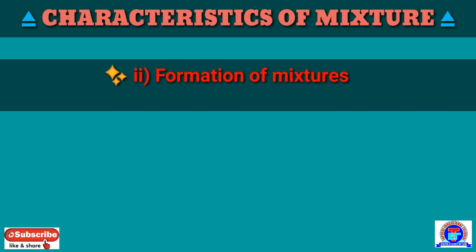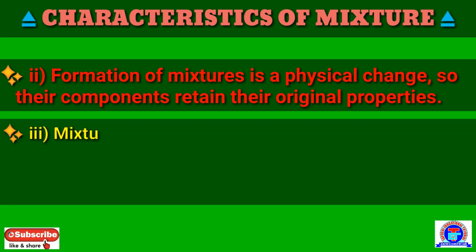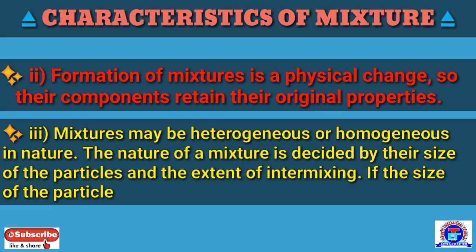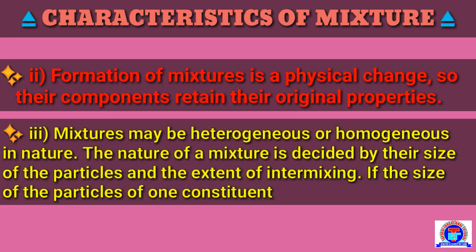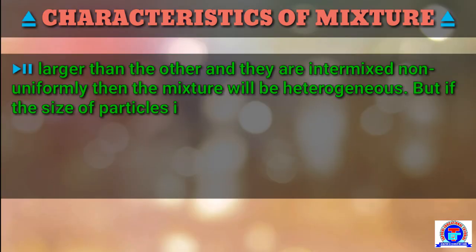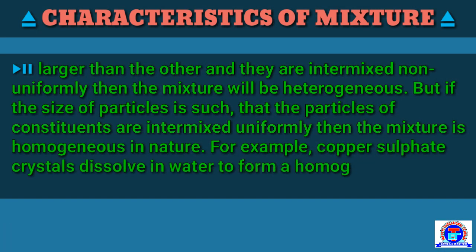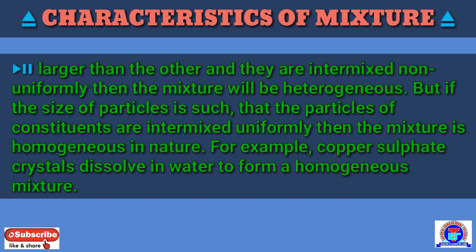Number 2: formation of a mixture is a physical change, so the components retain their original properties. Number 3: a mixture may be heterogeneous or homogeneous in nature. The nature of the mixture is decided by the size of the particles and the extent of intermixing. If the size of the particles of one constituent is larger than the other and they are intermixed non-uniformly, the mixture will be heterogeneous. But if the particles are intermixed uniformly, then the mixture is homogeneous in nature. For example, copper sulfate crystals dissolve in water to form a homogeneous mixture.